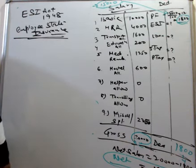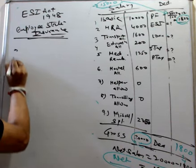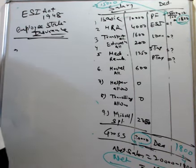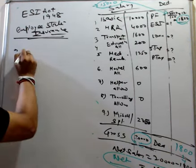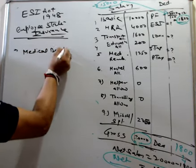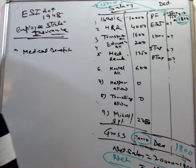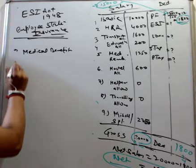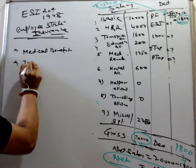ESI is 1948. ESI is basically to provide medical benefits. Basic function is that if someone has injured, he will get free hospitalization, free medical facilities. What is the condition of medical benefits? Injury, hospitalization.